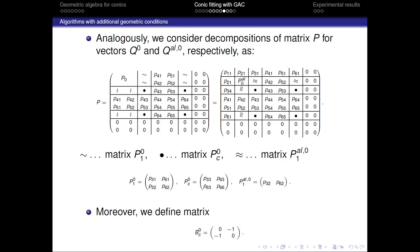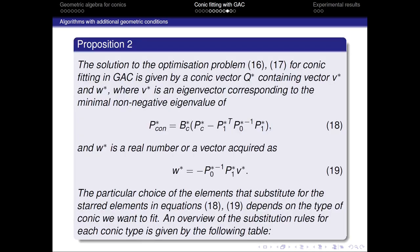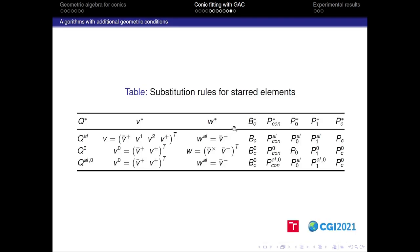So, for example, the symbol of a simple tilde stands for the matrix P10 that is described here. Moreover, this neglecting of particular columns and rows may also affect the matrix Bc, so we additionally define the matrix Bc0 of this form. Consequently, after defining all these decompositions and the matrices produced, we may formulate the proposition 2 that is almost identical to proposition 1. This proposition states that the solution to the new optimization problem for conic fitting in GAC is given by a conic vector Q star containing vector V star and W star, where V star again is an eigenvector corresponding to the minimal non-negative eigenvalue of certain matrix operator.